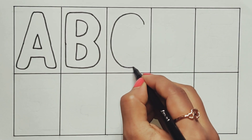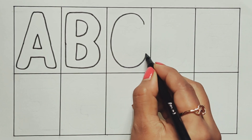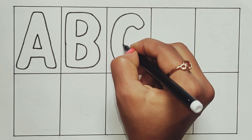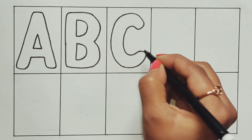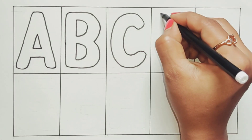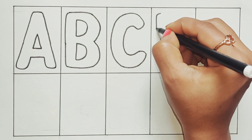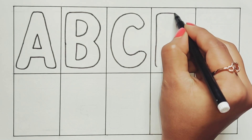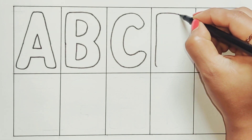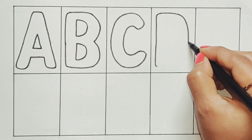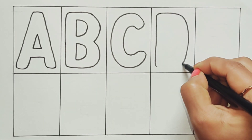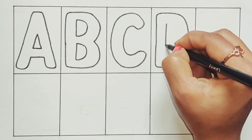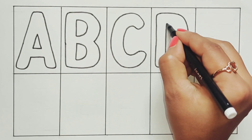A, B, C, D, E, F, G, H, I, J, K, L, M, N, O, P, Q, R, S, T, U, V, W, X, Y, and Z. Now I know my ABCs, next time won't you sing with me?